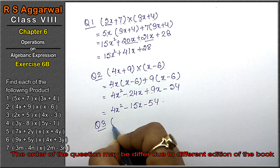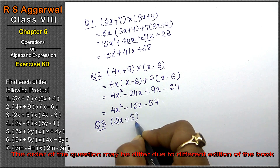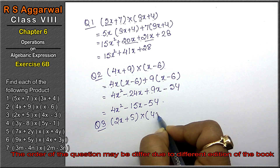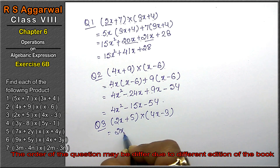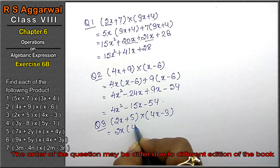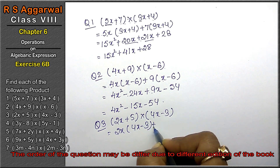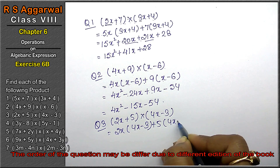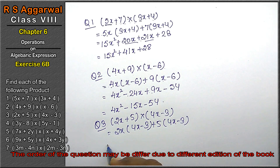Let's do the third question of Exercise 6B, that is algebraic expressions. Question number three is (2x + 5) multiplied by (4x - 3). So: 2x multiplied by (4x - 3), plus 5 multiplied by (4x - 3).